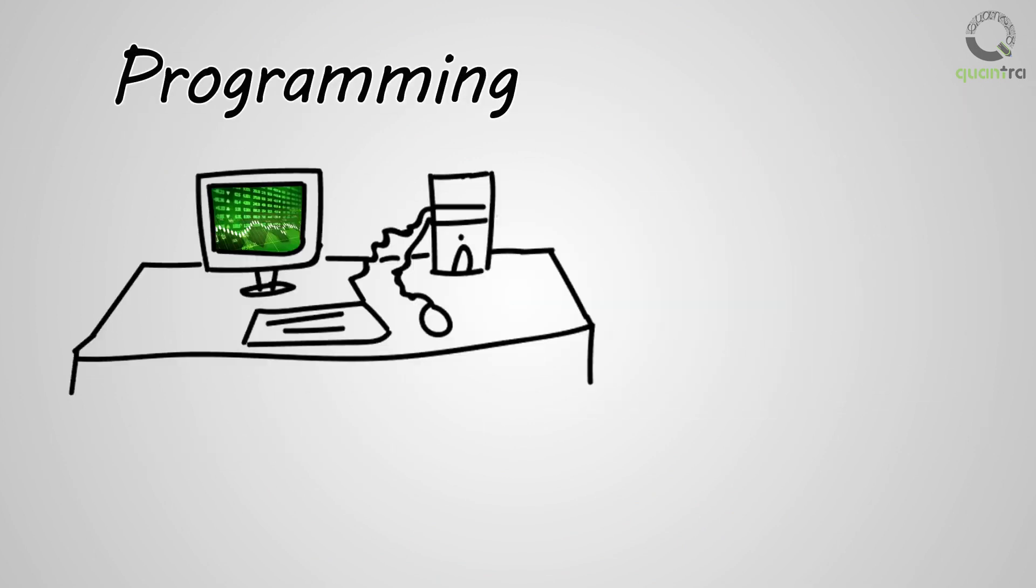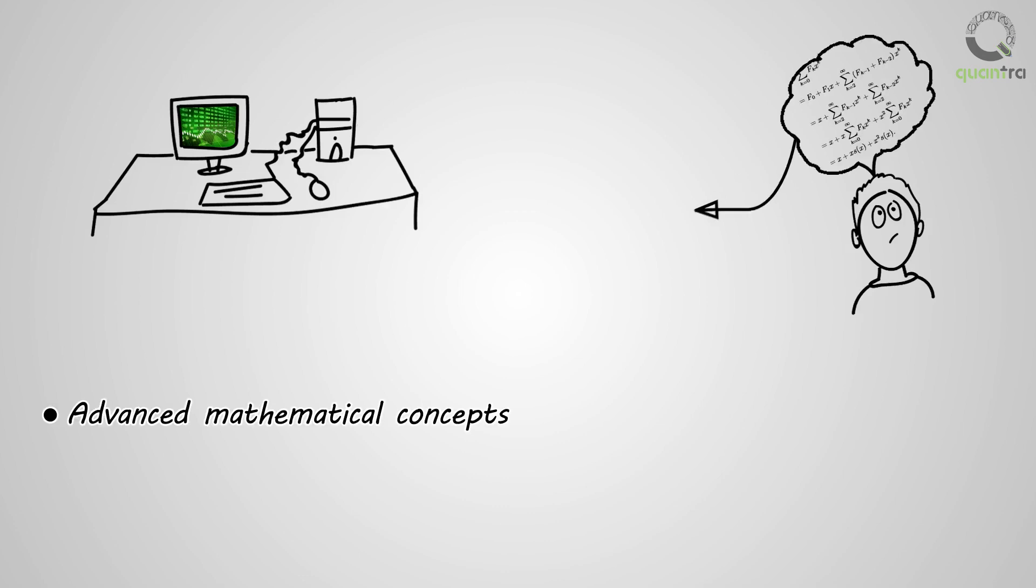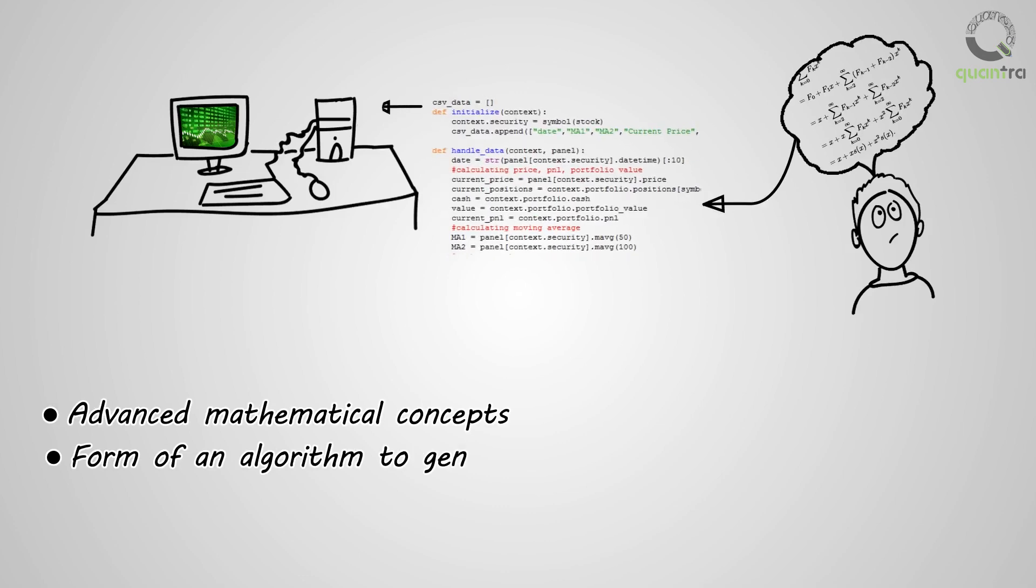Programming not only makes processes fast and efficient but also scalable. Algorithmic trading is using defined set of instructions and advanced mathematical concepts in the form of an algorithm to generate trading signals and place orders.